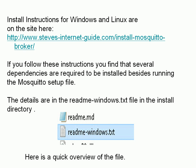If you download the install files from the Eclipse site and you start the install, at the end of the install you'll find several dependencies that you need besides running the Mosquitto setup. If you don't install those dependencies then the Mosquitto Broker won't work. The details of those dependencies you'll find in the README Windows text file, which should be shown at the end of the install or you'll find it in the install directory.